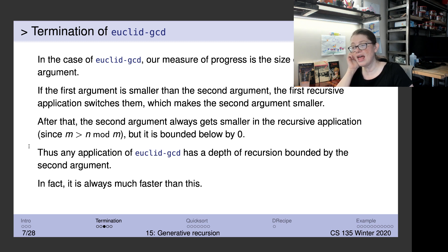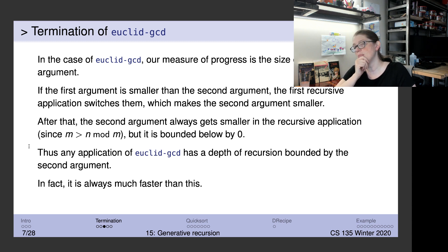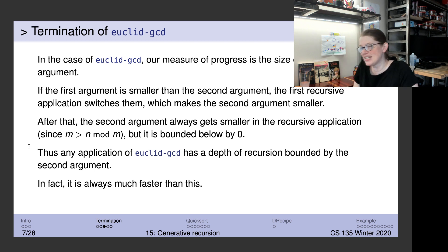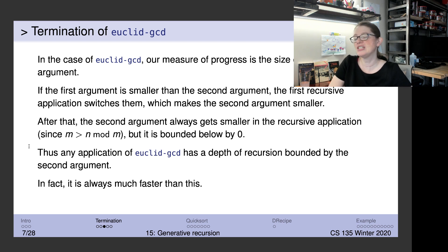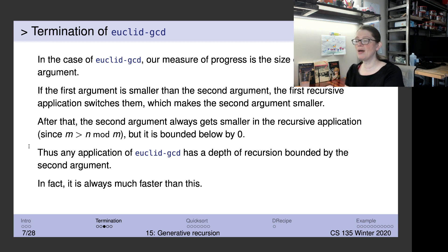One concept related to termination is recursive depth — how many steps before we arrive at the base case. For simple recursion, the depth equals the number of items in the list. For Euclid's GCD, we know that m is always greater than (remainder n m), so m is getting smaller each time, meaning the depth is bounded by m. However, in practice Euclid's GCD is much faster than m steps — it typically terminates much sooner.